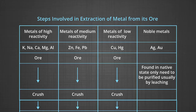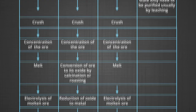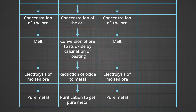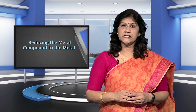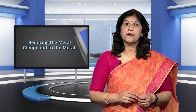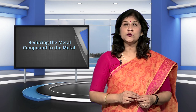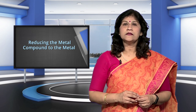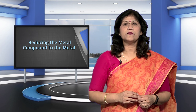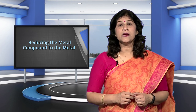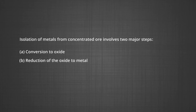For the steps involved in extraction of metal from its ore, let us have a look at the table. For metals of medium or low reactivity, the concentrated ore must be converted into a form suitable for reduction. Usually, the ore is converted to oxide before reduction, as oxides are easier to reduce. Thus, isolation of metals from concentrated ore involves two major steps: first, conversion to oxide; and second, reduction of the oxide to metal.